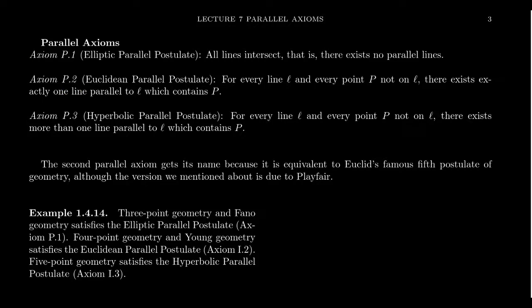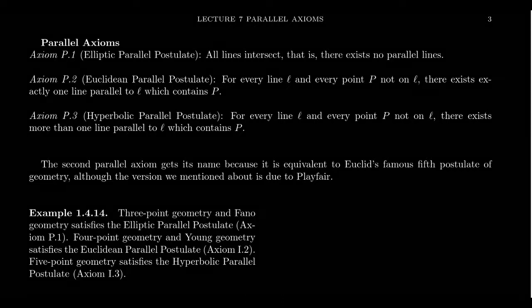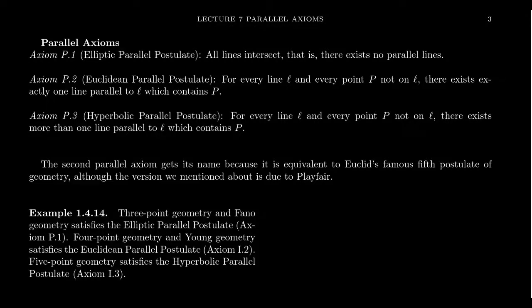The first one is known as the elliptic parallel postulate. These names will make more sense in the future, because the elliptic, Euclidean, and hyperbolic parallel postulates will be the designators for elliptic, Euclidean, and hyperbolic geometry — something we'll define later on. For now, just imagine this is a fifth axiom we could attach to the four incidence axioms to get a more restrictive geometric theory. The elliptic parallel postulate says that all lines intersect — another way of saying that parallel lines don't exist.